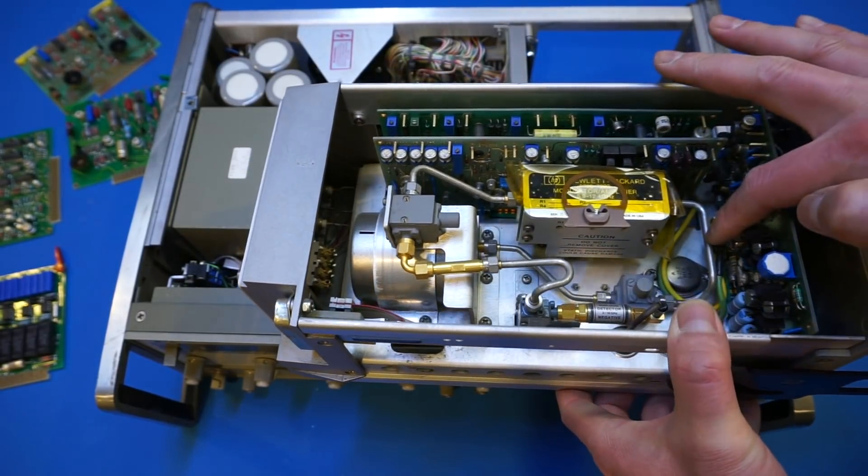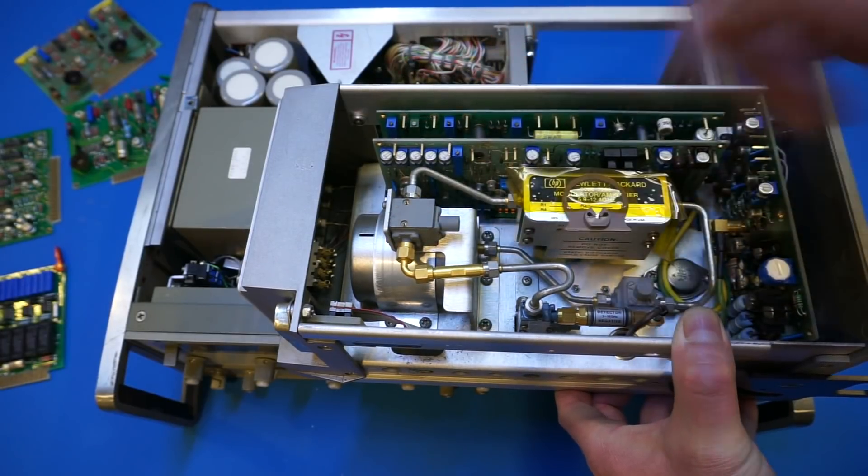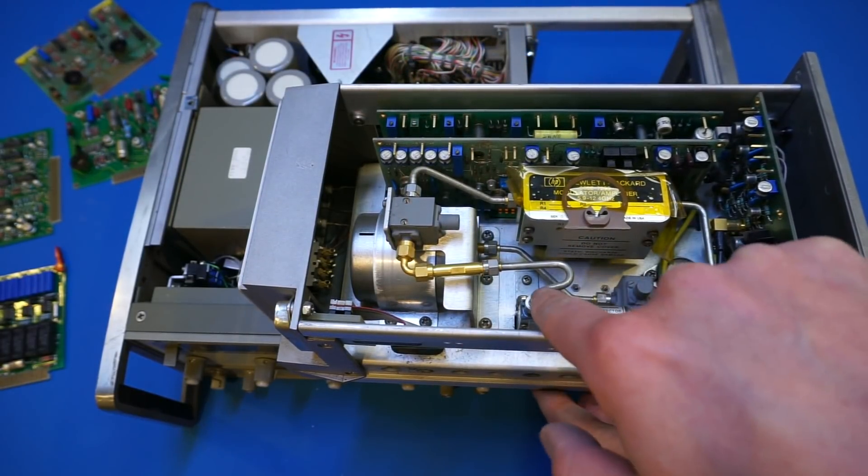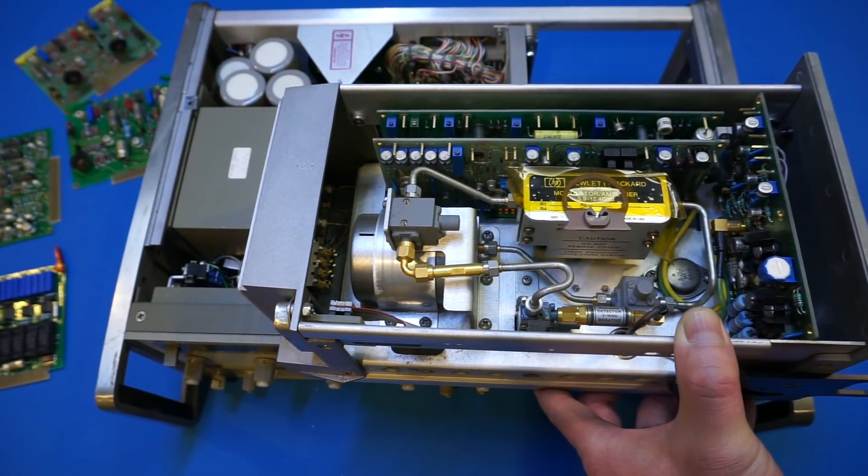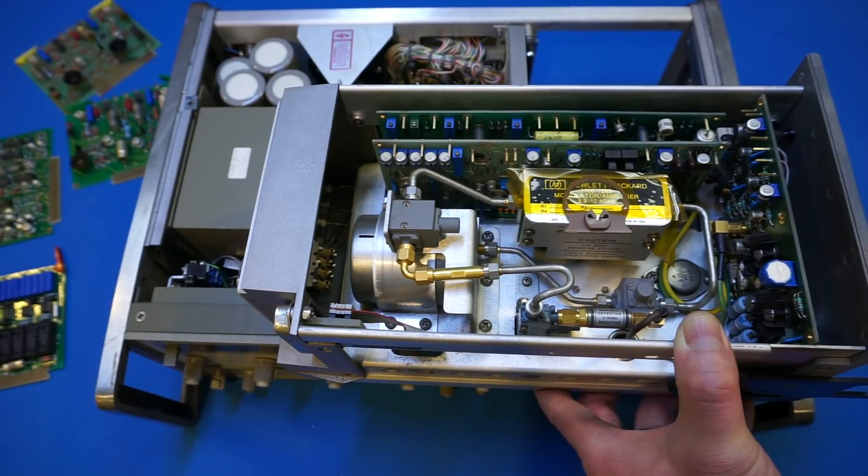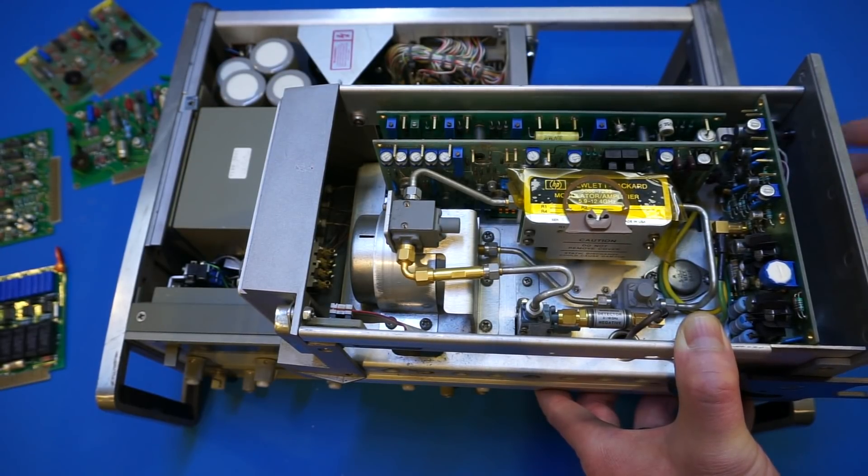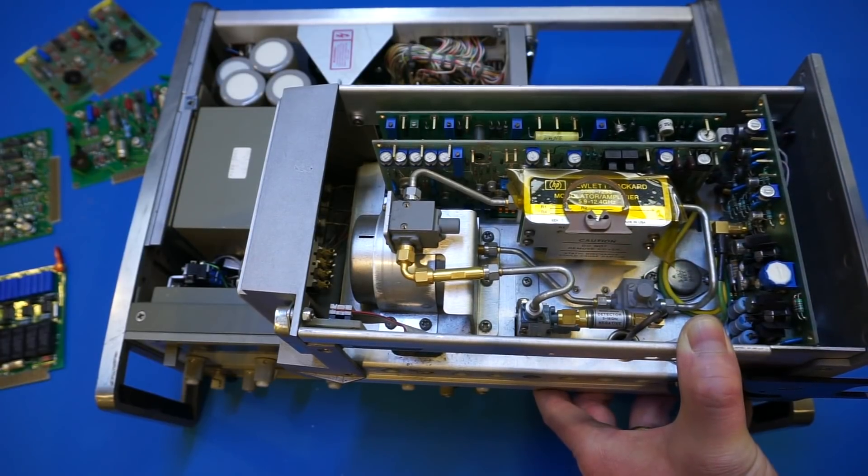Anyway, so once this comes out of this, it passes through another isolator. And part of that goes through a detector. Basically, this forms the automatic level controlling circuitry for controlling the output power.